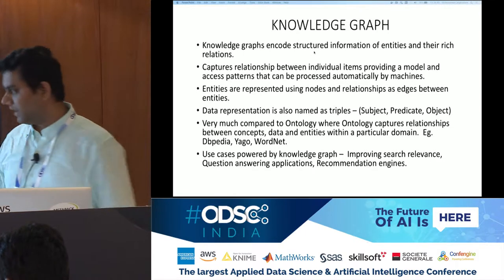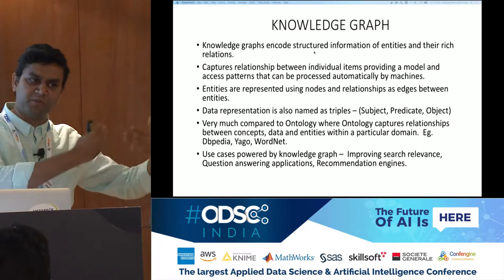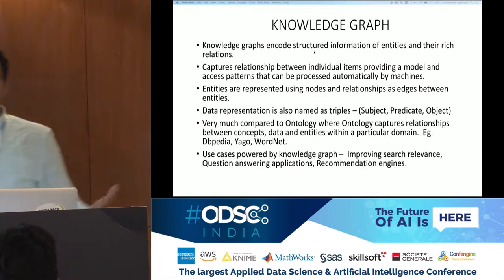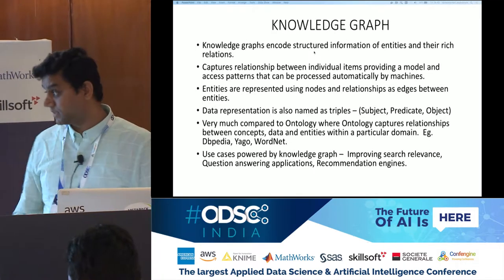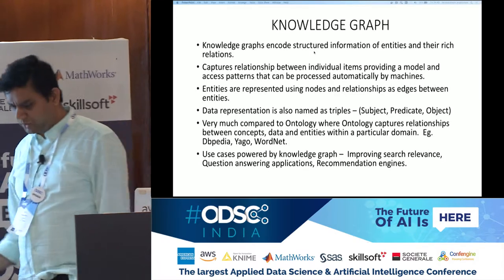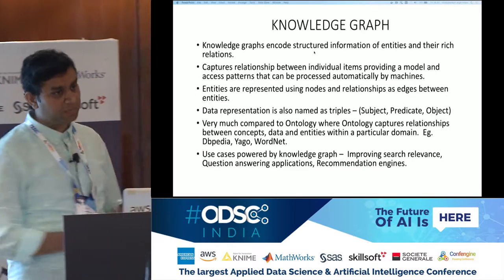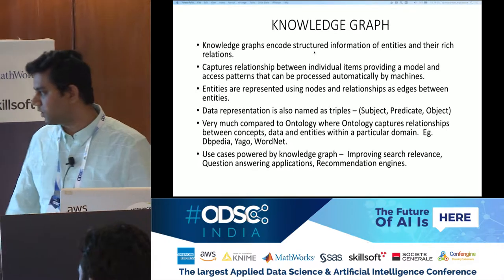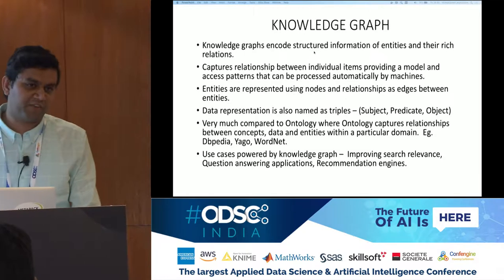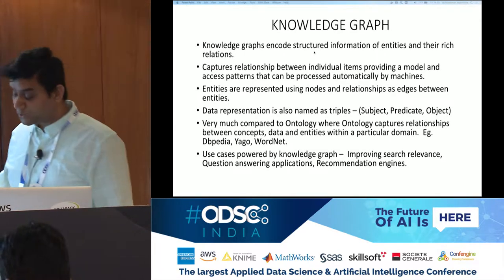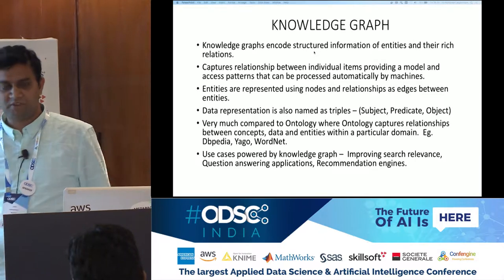Some use cases powered by knowledge graphs include improving search relevance — Google released a paper in 2011 on this. The panel on the right side of a Google search result is your knowledge graph. What you type can be an entity — a person, a hotel. They revolutionized knowledge graphs in production. People also use them in QA applications like voice assistants and home assistants. Recommendation engines personalize product offerings via knowledge graphs. You can also augment knowledge graph results with deep learning models.